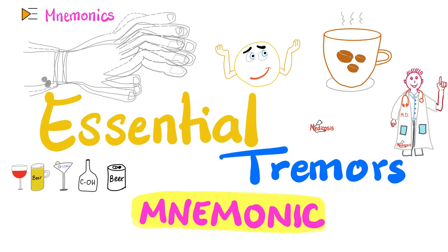We have many essentials in medicine — essential amino acids, essential fatty acids, essential hypertension, which is idiopathic. Translation: we are idiots and we cannot figure out the pathology. Same thing here: what's the cause of essential tremors? Unknown. That's why we call it essential.